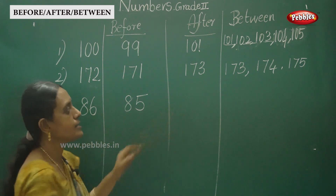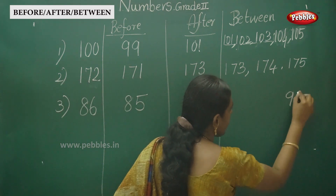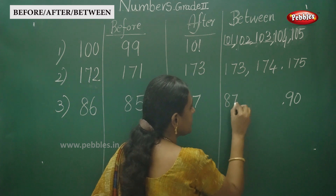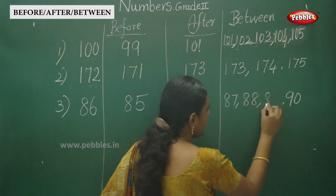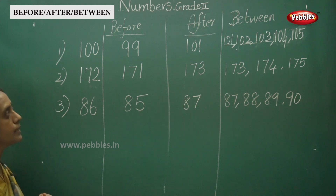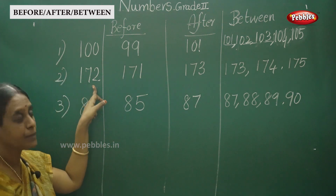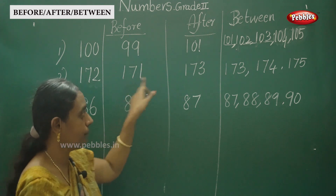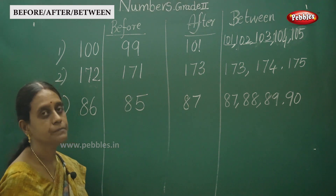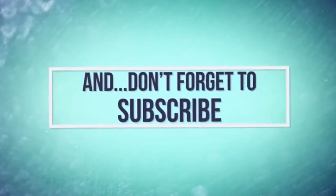And between numbers — the question is 86 to 90 — so between 86 the numbers are 87, 88, and 89. This is the way to write before number, after number and between numbers. For a 3-digit number like 172, use the 2-digit part (72) starting from 70. That is the pattern you can write.